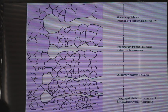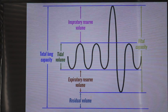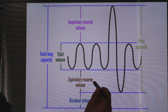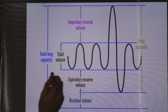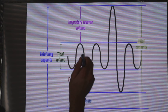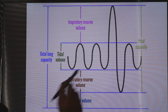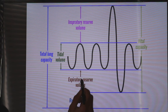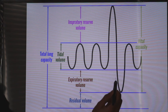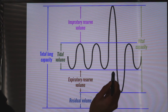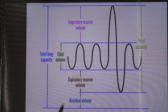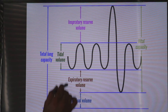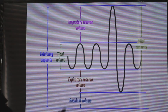In the young adult patient, the closing capacity will be well below the functional residual capacity. So if the patient takes a normal breath and expires normally, the alveoli will not close. If the patient expires more than the normal breath — for example to the expiratory reserve volume — the alveoli will start to have closure.